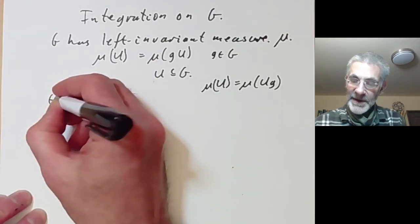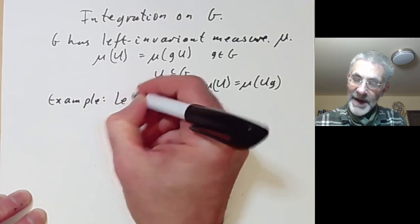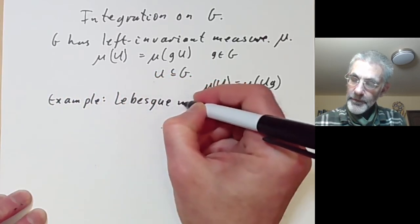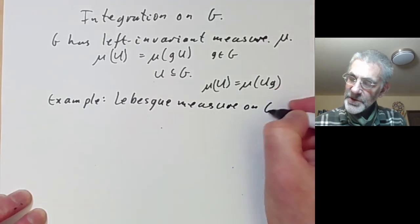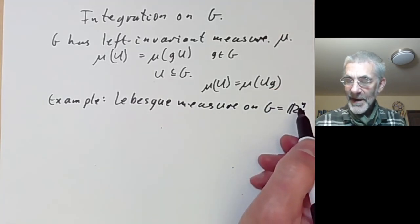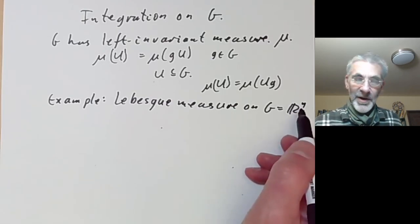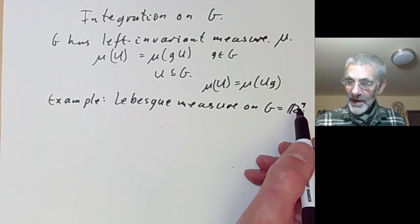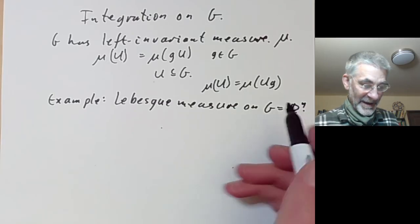A typical example is just Lebesgue measure on the group G which is R to the n, an n-dimensional vector space. The usual measure on R to the n is left invariant, meaning it's invariant under translations.